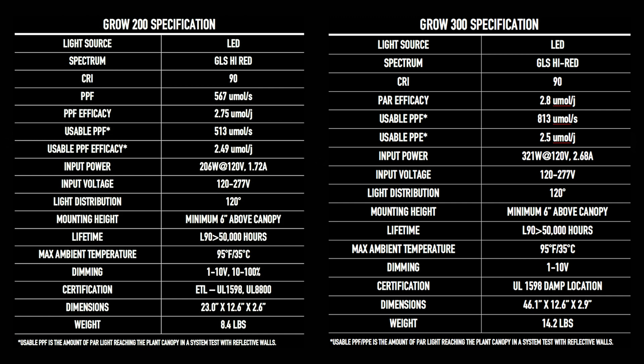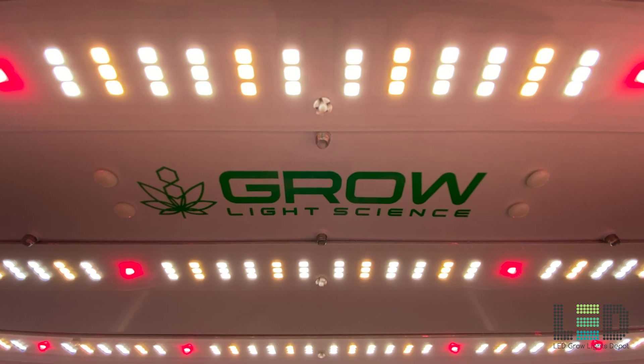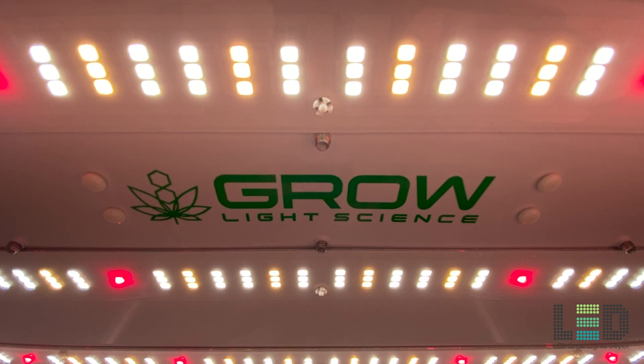I won't be covering the Grow 200 in this review. The differences between the Grow 200 and 300 are the size of the fixture, the light output, wattage draw, and coverage area. The diodes, spectrum, drivers, and warranty are the same. Let's delve further into the Grow 300 and first talk about its build.